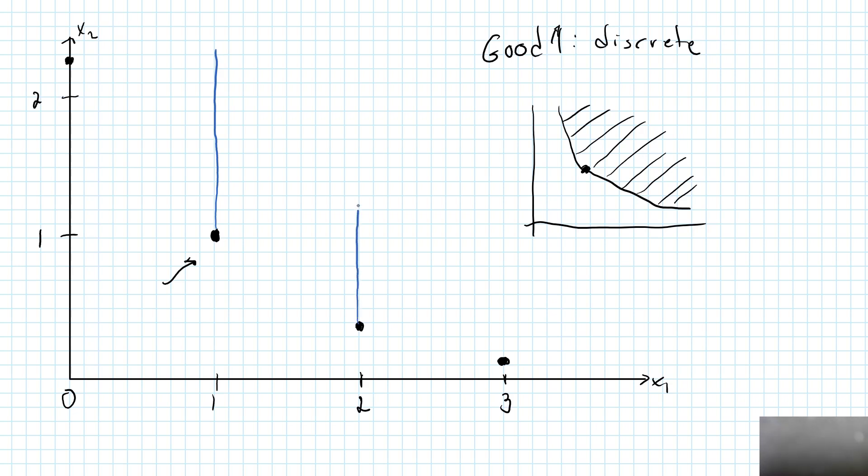Here are strictly preferred bundles to this one, and here are strictly preferred bundles. Same thing over here. The weakly preferred set in the case when good 1 is discrete is this collection of broken straight lines.